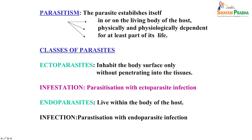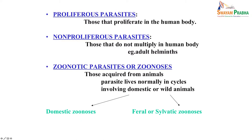Proliferous parasites proliferate in the human body, while non-proliferous parasites do not multiply in the human body — like adult helminths. Zoonotic parasites, or zoonoses, are infections acquired from animals — normally occurring in domestic or wild animals. They will be known accordingly as domestic zoonoses or sylvatic zoonoses.